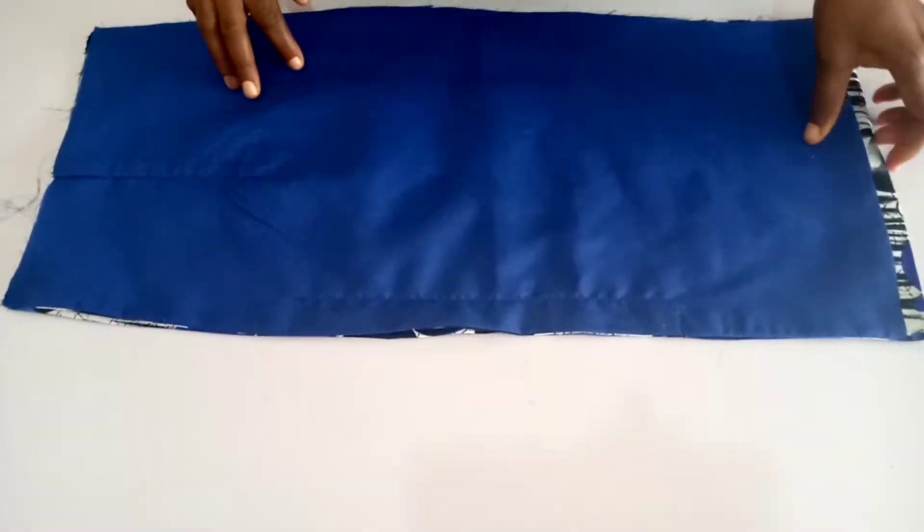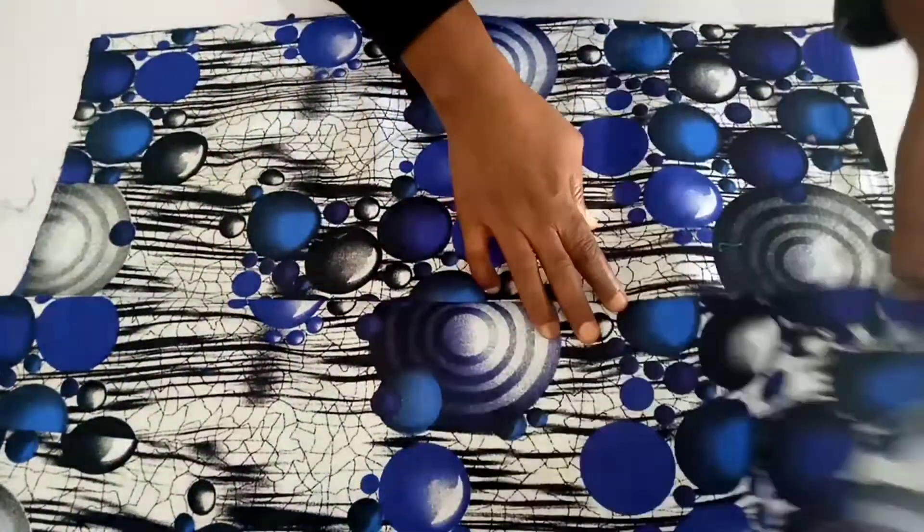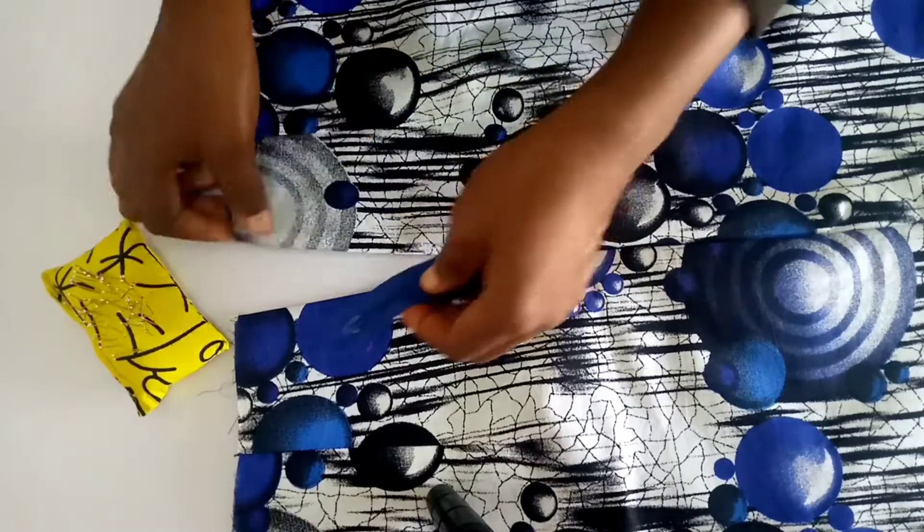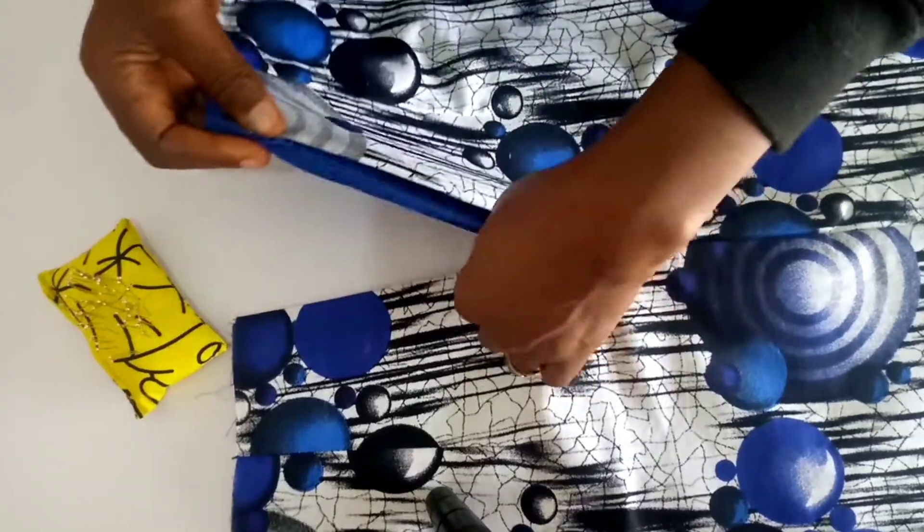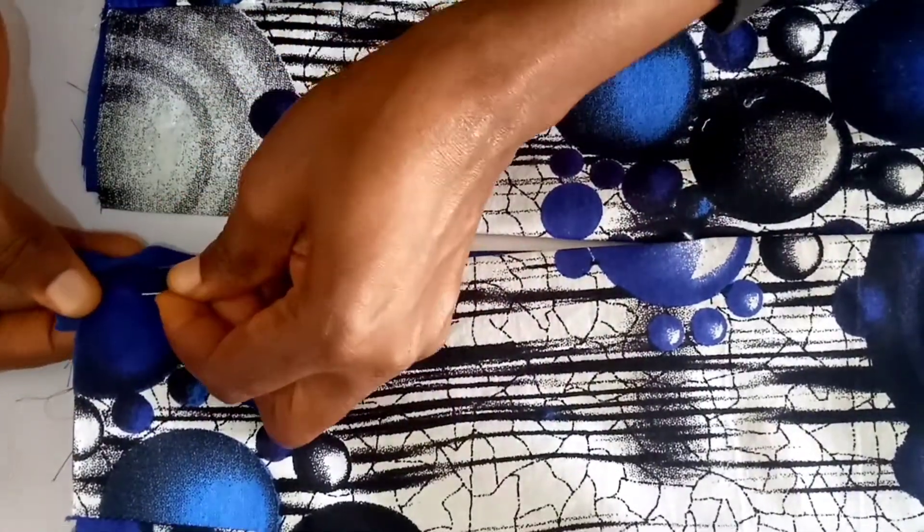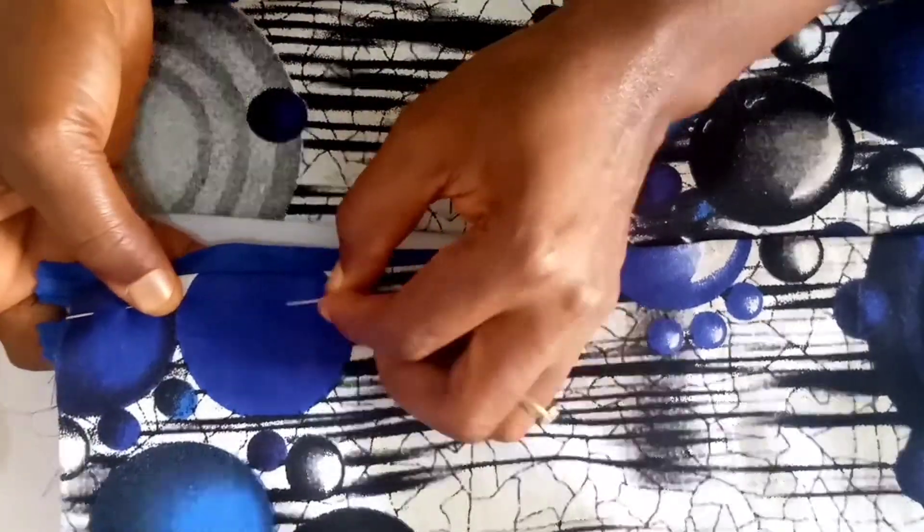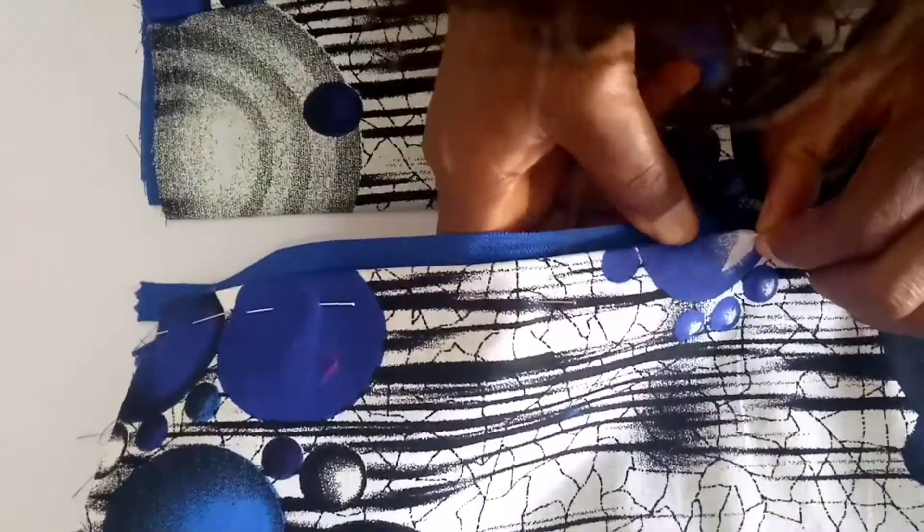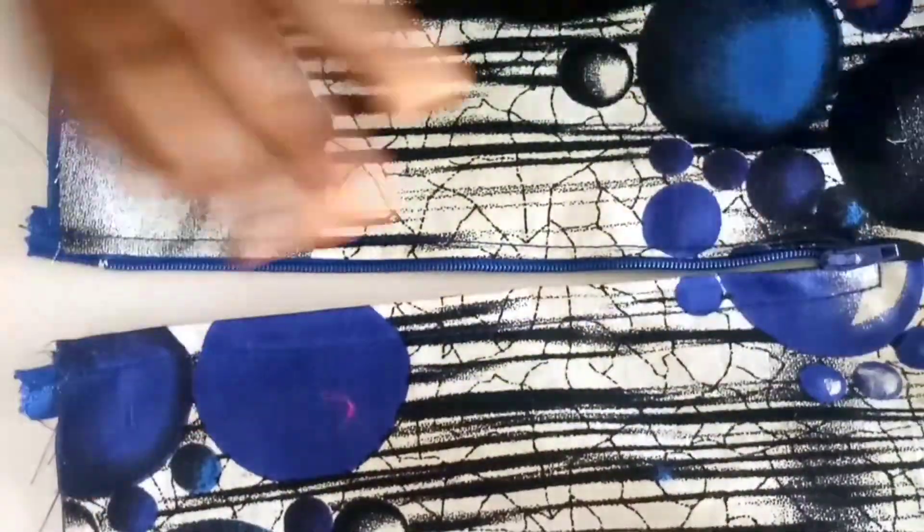So this is what it looks like after sewing. Next, we are going to fix our zip. So you pin your zip and fix your zip. After pinning, then we sew the zip.